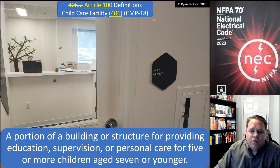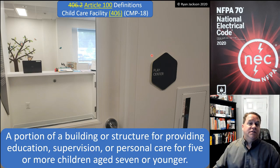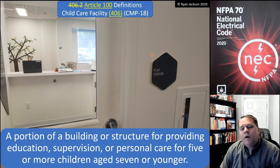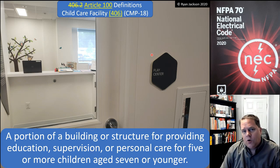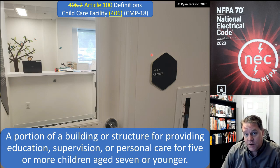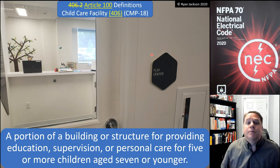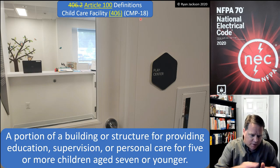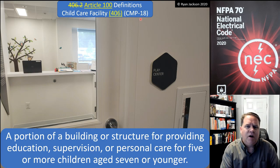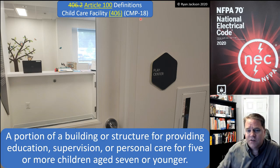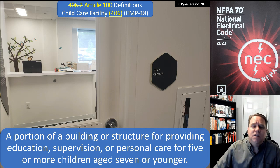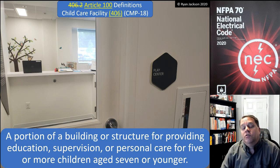There's also a parenthetical reference "CMP-" followed by a number from one through 18 or 19 depending on the year. That number is the code-making panel that has purview over the definition. It doesn't mean anything to 99% of code users; it's only relevant to the 1% who are on code-making panels or making proposals during the code development process. So when you see CMP-2 or CMP-5 or whatever, you can completely ignore it if you're a regular code user.